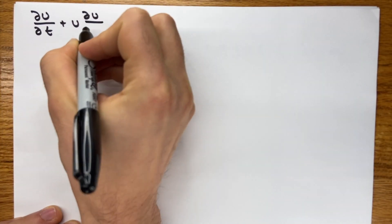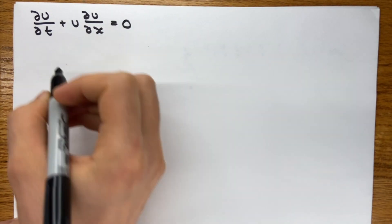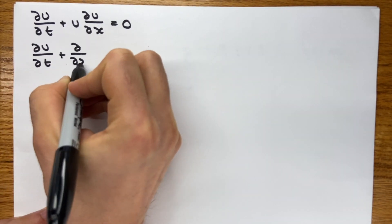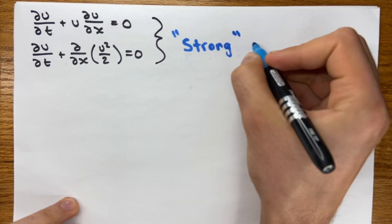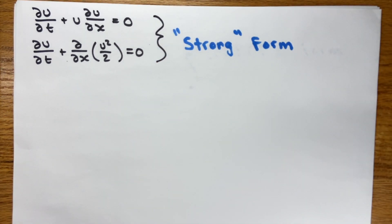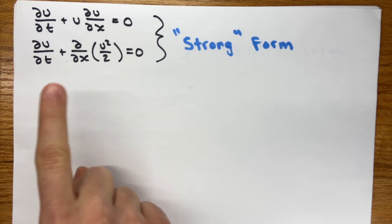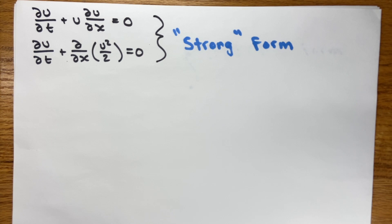This is the strong form of Burger's equation. For the sake of the next steps, it's actually more useful to write it in what's called the conservative form, where we just use the product rule on the derivative term. So we have a problem, because U can be discontinuous, but we can't take a derivative of a discontinuous function. So we do something instead.